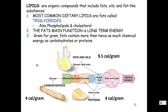Now let's talk about fats. Fats are lipids. The most common dietary lipid we consume are triglycerides. We also eat phospholipids from cell membranes and cholesterol. The main function of fats is long-term energy storage, because gram per gram, fats contain more than twice as much chemical energy as proteins.